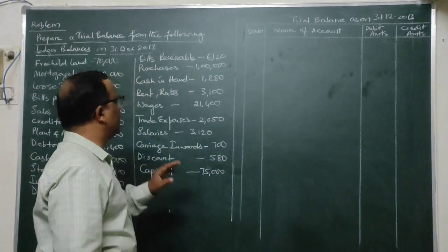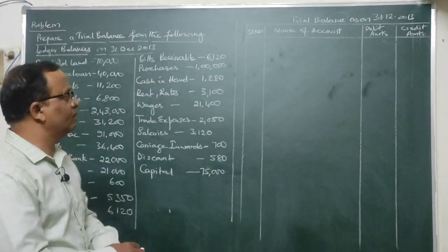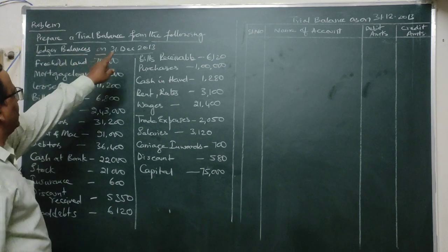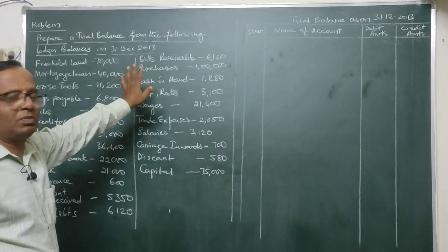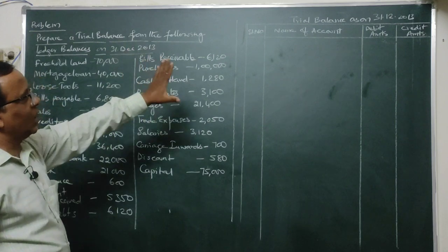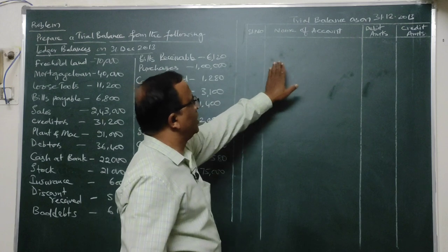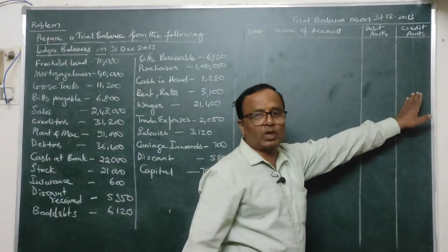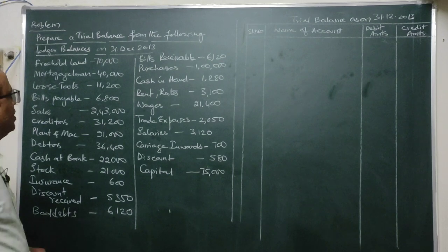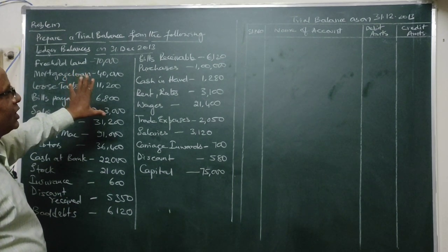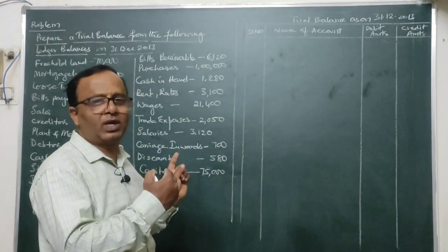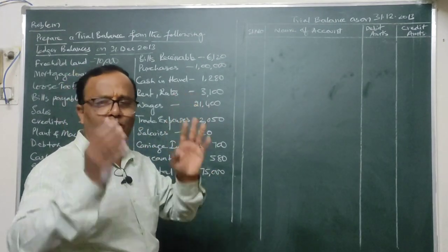Now let's take a problem. The question asks us to prepare a trial balance from the following ledger balances as on 31st December 2013. The trial balance format has columns for serial number, name of account, debit amounts, and credit amounts. By seeing each account, you should be able to identify whether it shows a debit or credit balance. Even if you follow this one problem carefully, you will easily be able to handle any trial balance question in the examination.